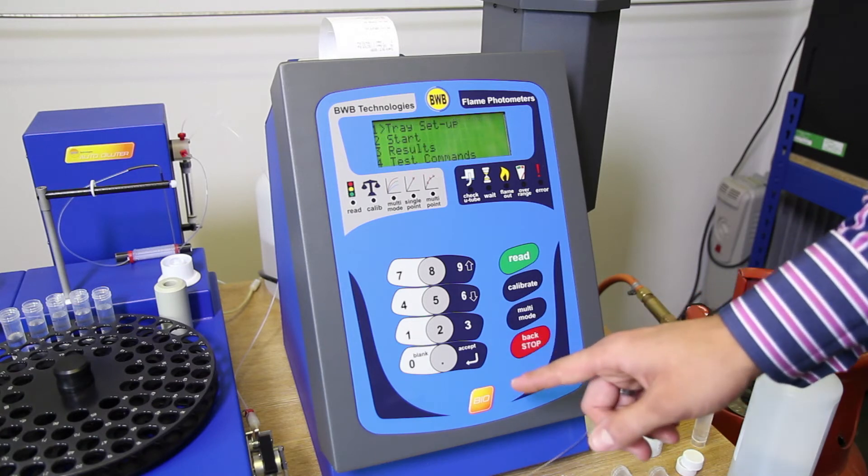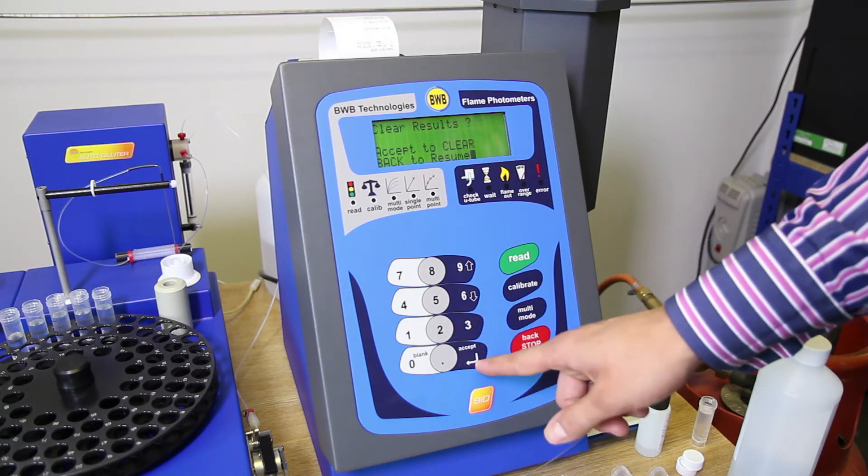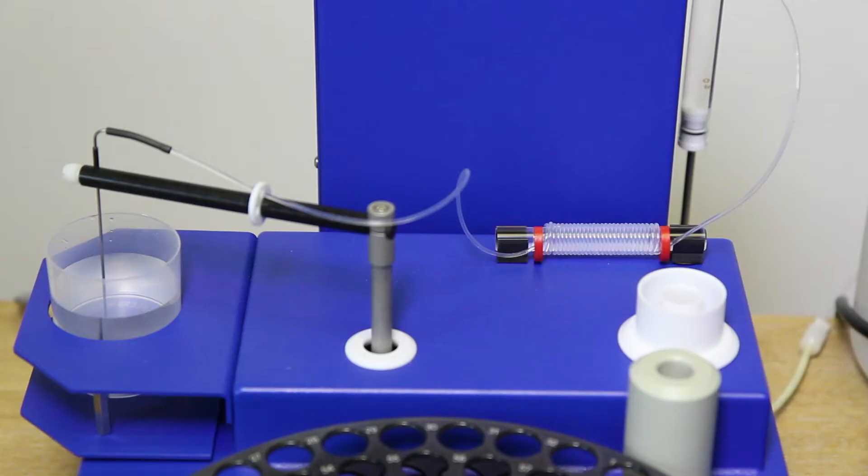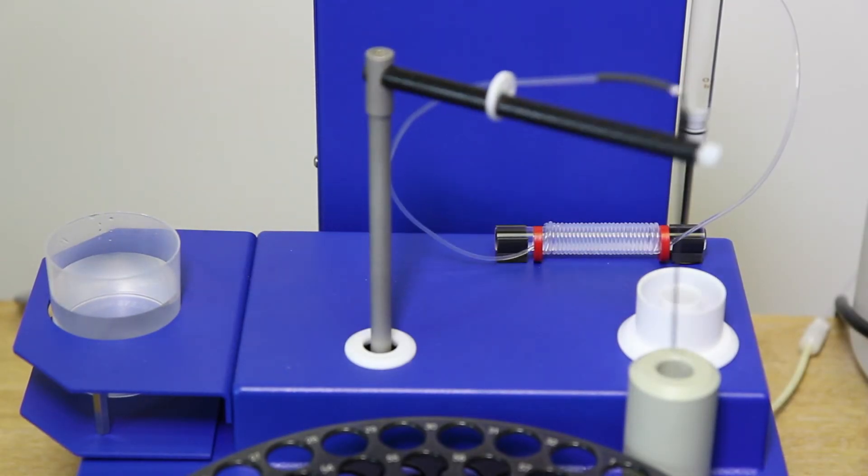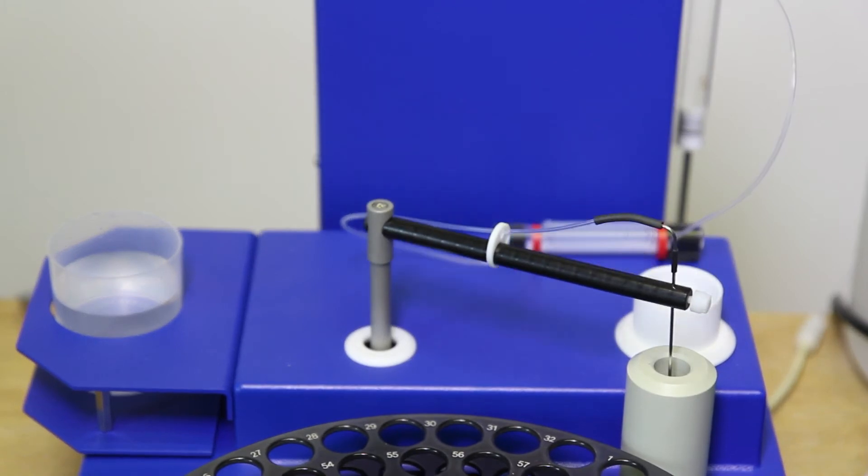The previous results can be erased using clear. When the tray details have been entered, press back and select start to commence the test run. But make sure there is sufficient diluent in the reservoir first.